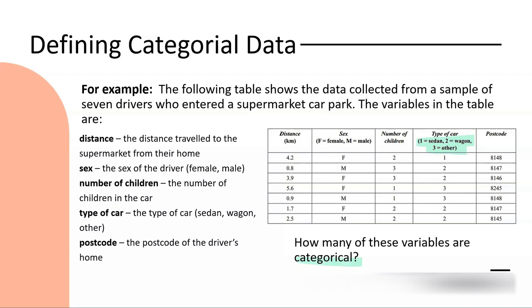So here, how many of these variables are categorical? Going through the options, distance in kilometres is numerical. Sex, male or female, yes, that's categorical. Number of children would be a numerical variable. Type of car, categorical, even though we've assigned a number to each category. And postcode, categorical. Remember your postcode is a value, a number that is assigned to an area based on the distance from the city CBD. So how many of those are categorical? We can see we have three of the variables.